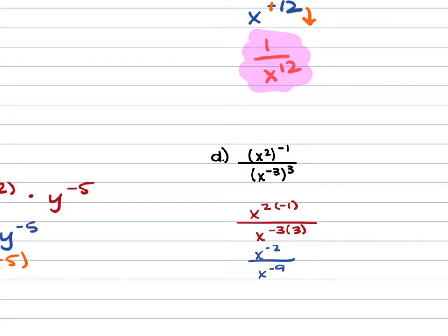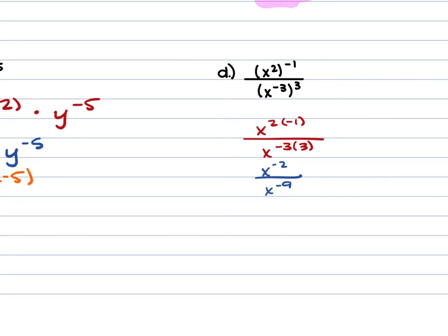In order to turn these exponents to be positive, we are going to switch where they are. That negative 2 becomes a positive 2 if we pull that x squared to the bottom, and that negative 9 turns into a positive 9 if we bring that x to the 9th power to the top. So this gives us x to the 9th power over x squared. When you are dividing powers with the same bases, you subtract those powers — so x to the 9 minus 2 gives us x to the 7th power.